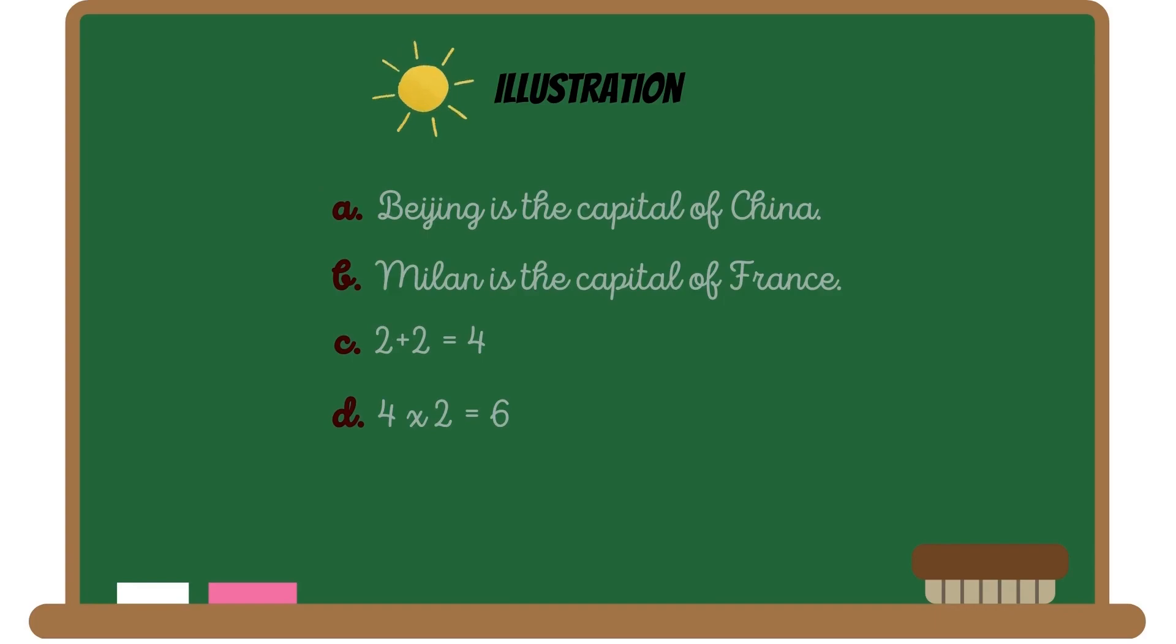In this example, letter A: Beijing is the capital of China. B: Milan is the capital of France. C: 2 plus 2 equals 4. Then D: 4 times 2 equals 6. In this illustration, the propositions A and C are true, while propositions B and D are false.